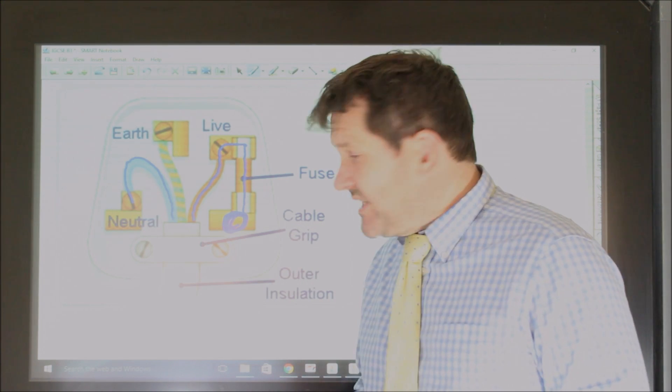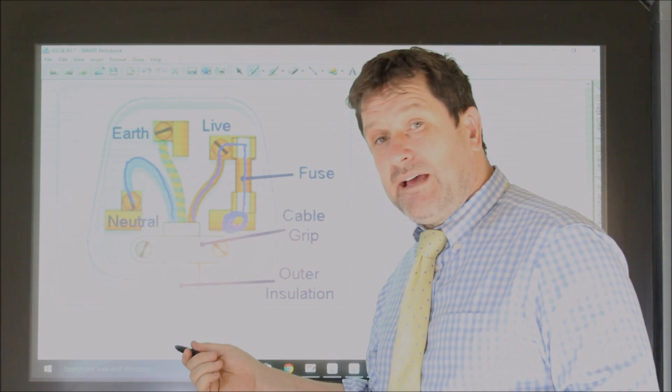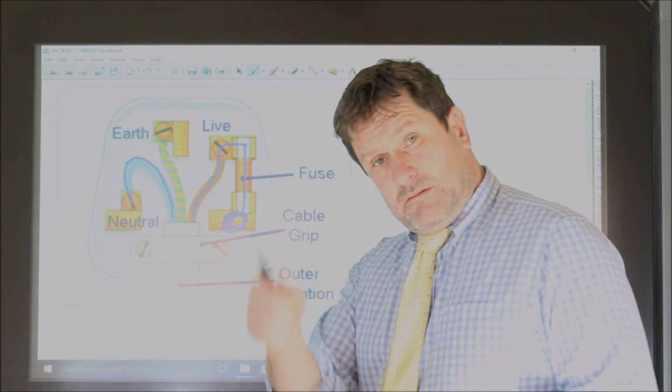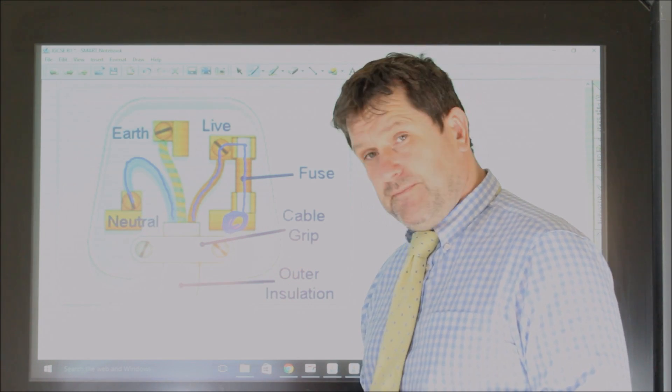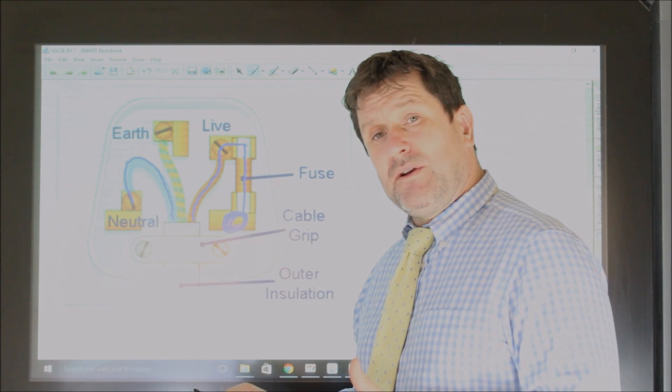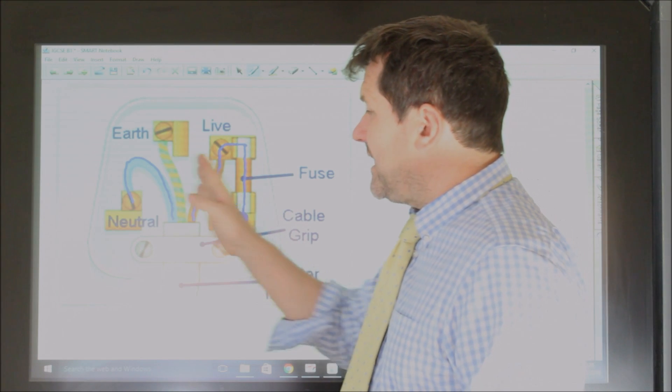So the electricity comes in through the live, through the fuse, down the brown wire, to the appliance, back again, and down back through the neutral. So a plug is just like pins around a battery, only it's alternating current, brown and blue.